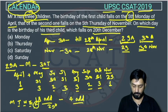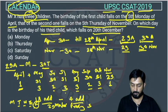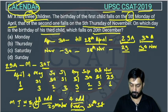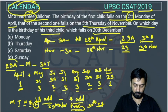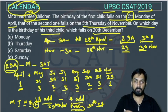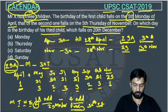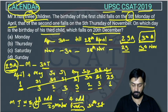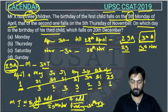On 29th November there will be Friday, and 30th will be Saturday. But the question says the fifth Thursday of November — we are getting Friday and Saturday, not Thursday. So this case is not possible. It means the birthday of the first child is not on 29th April. So we consider the second case: the first child is born on 30th April.